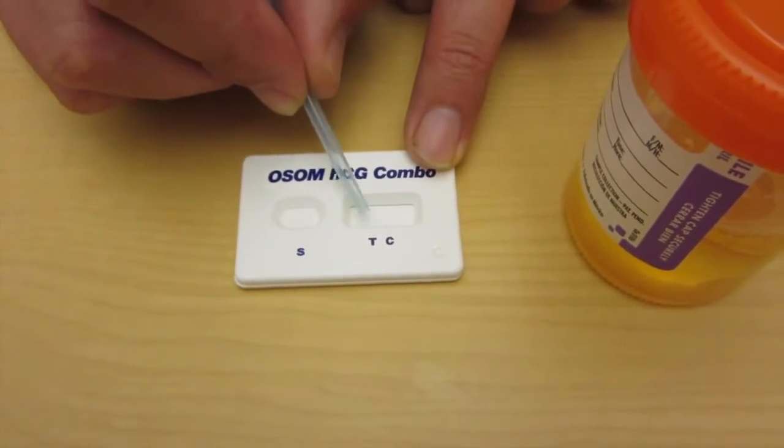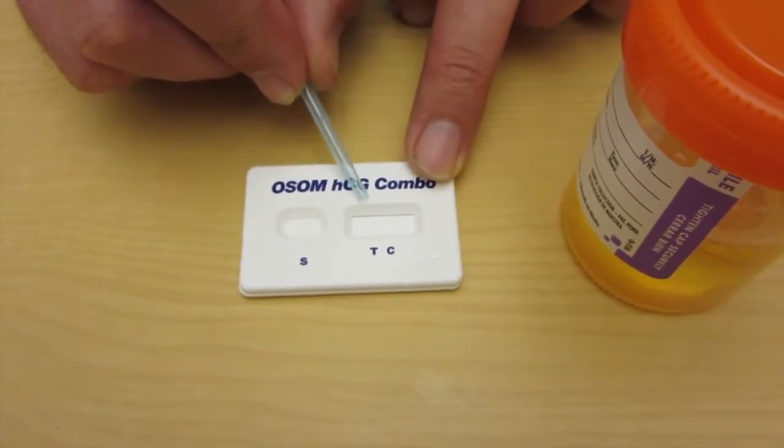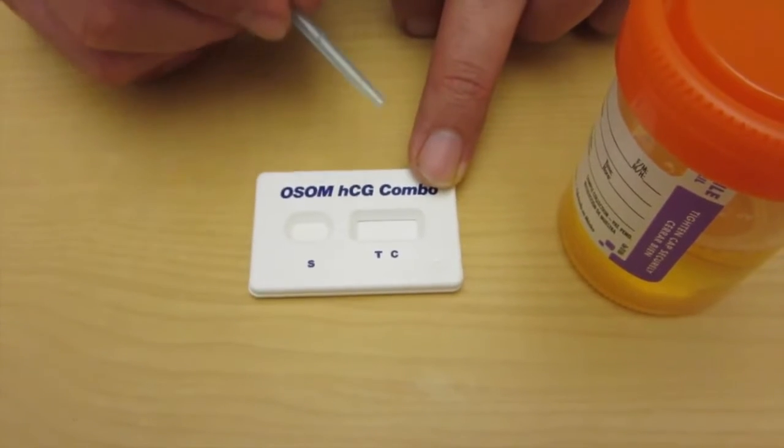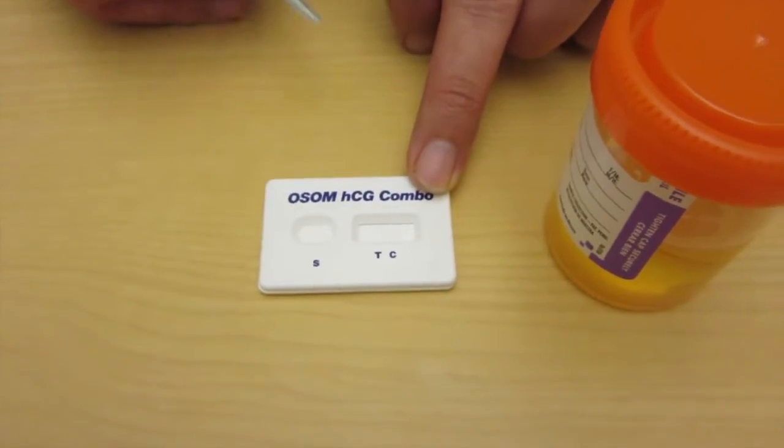If you have a line here, you're pregnant. If you don't have a line here, you're not pregnant. If the line is really faint, consider retesting it within 48 to 72 hours or doing a blood HCG called a quantitative serum HCG.